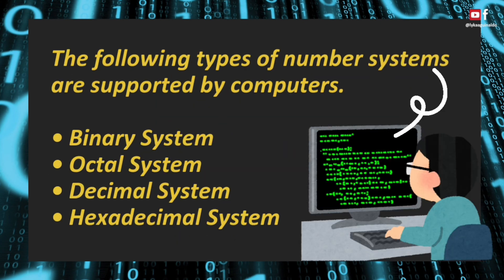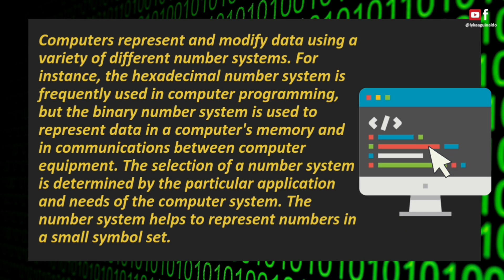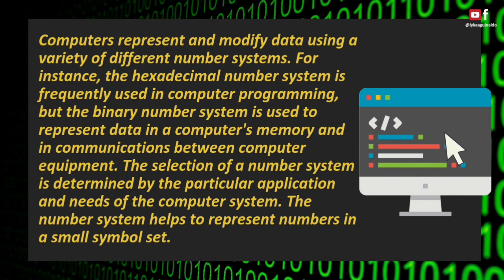The following types of number systems are supported by computers: binary system, octal system, decimal system, and hexadecimal system. Computers represent and modify data using a variety of different number systems. For instance, the hexadecimal number system is frequently used in computer programming, while the binary number system is used to represent data in a computer's memory and in communications between computer equipment. The selection of a number system is determined by the particular application and needs of the computer system.